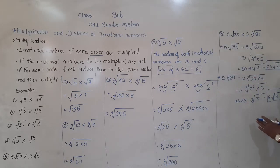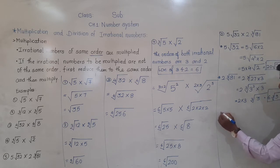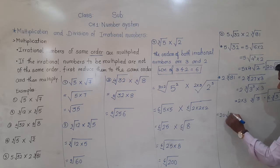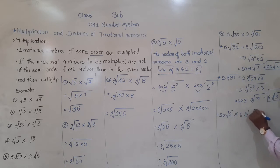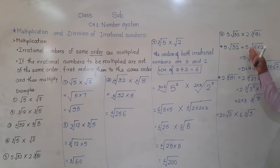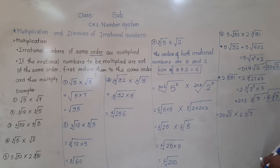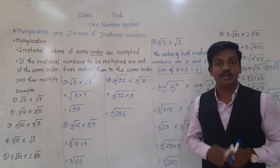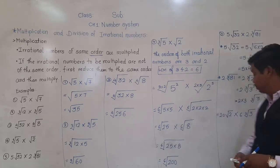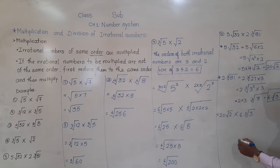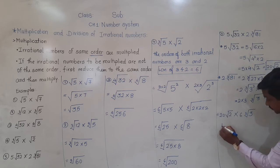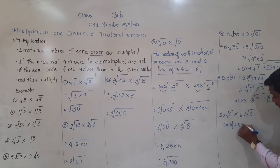Now our example is: 20 square root of 2 multiplied by 6 cube root of 3. But again their orders are not same — here order is 2, here order is 3. So we need to make their order same. LCM of 2 and 3 is 6 again.